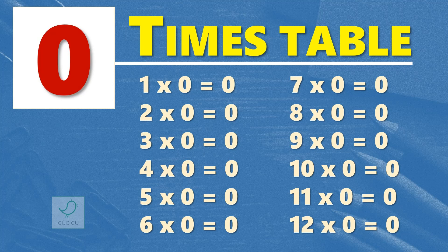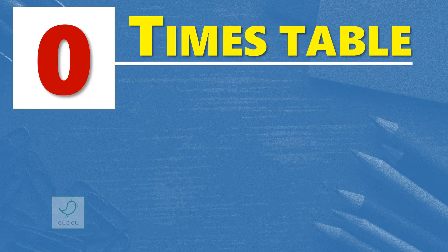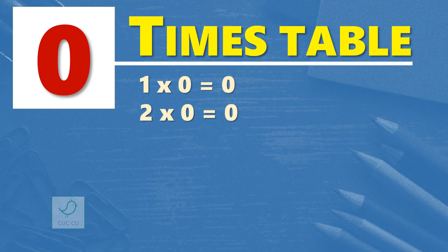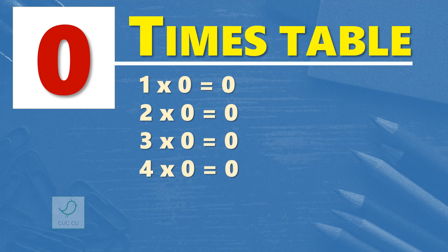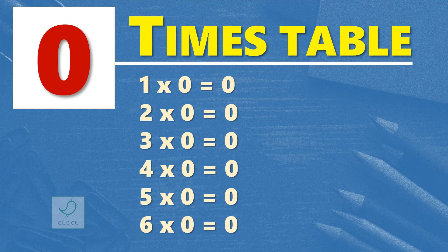Multiplication Table of 0. 0 times table. 1 times 0 is 0. 2 times 0 is 0. 3 times 0 is 0. 4 times 0 is 0. 5 times 0 is 0. 6 times 0 is 0. 7 times 0 is 0.